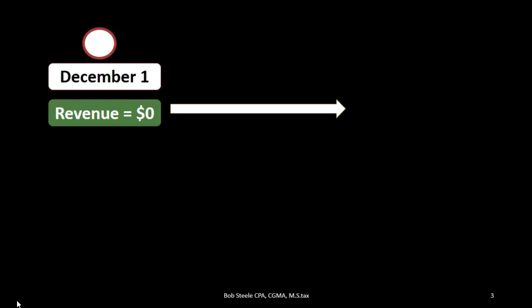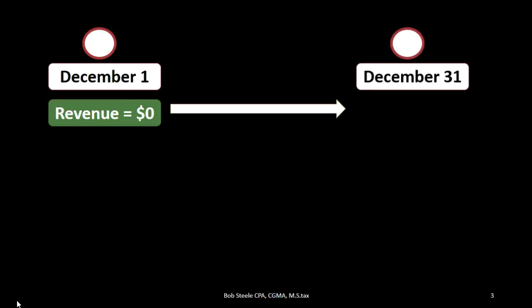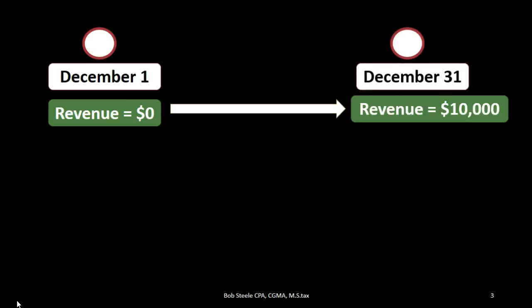For example, we will be looking at the month of December 1st through December 31st. You can think of it similar to trying to see how many miles you can drive within that same month's time period. What you would do is probably set the odometer to zero and then drive upwards for a month and see how many miles you drive. That's what we're going to do with the income statement — as of December 1st we have revenue of zero, and as we drive through the month we have revenue that ends at December 31st at $10,100.